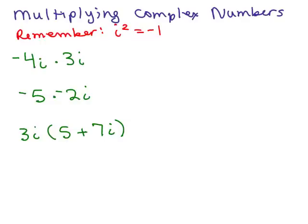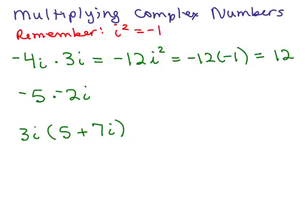Moving on to multiplying complex numbers, remember that i squared equals negative 1. You multiply just like you do with variables, except you must remember that i really is not a variable. For the first example, negative 4i times 3i: multiply negative 4 times 3 to get negative 12i squared. Then substitute i squared equals negative 1, giving negative 12 times negative 1, which equals 12.